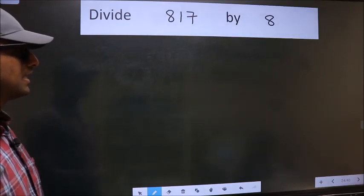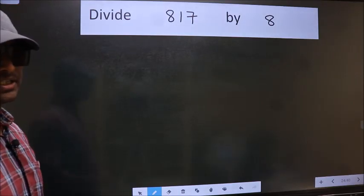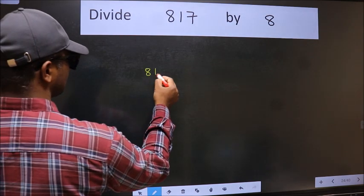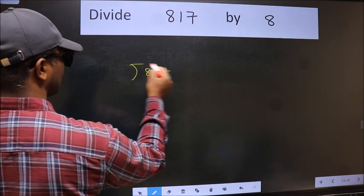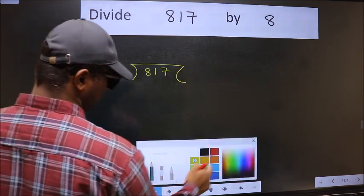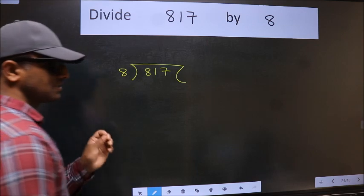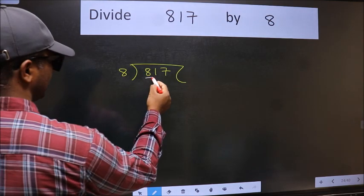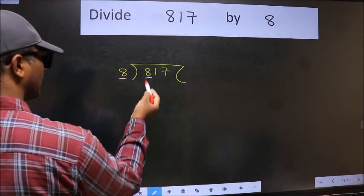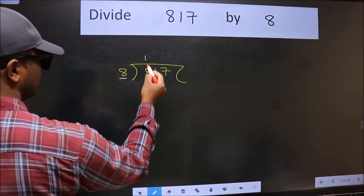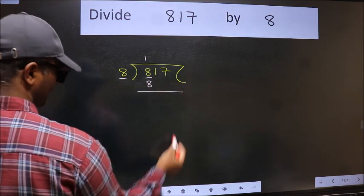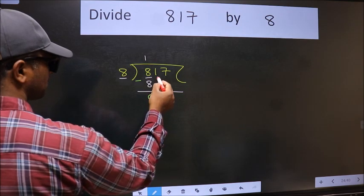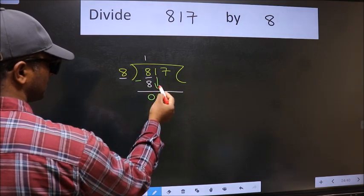Divide 817 by 8. To do this division we should frame it with 817 here and 8 here. This is your step one. We have 8 and 8 here — 8 in 8 goes once from the eight times table. Now we subtract and get zero, then bring down the beside number: 1.